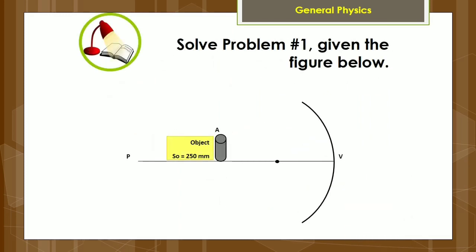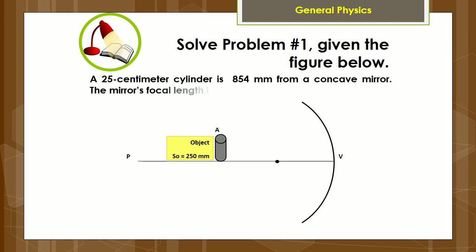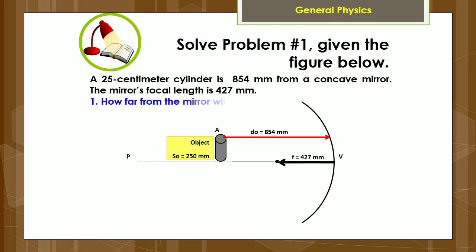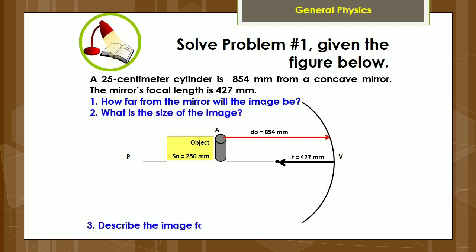Let us solve problem number one. Given the figure below, a 25-centimeter cylinder is 854 millimeters from a concave mirror. The mirror's focal length is 427 millimeters. Number one: how far from the mirror will the image be? Number two: what is the size of the image? Number three: describe the image formed.